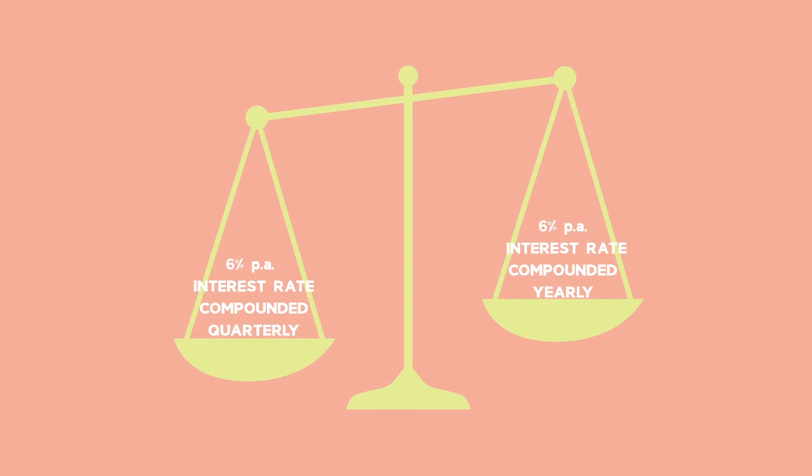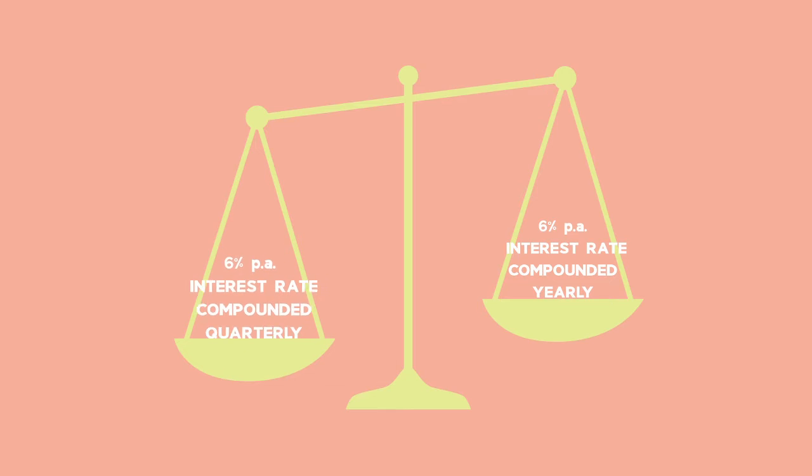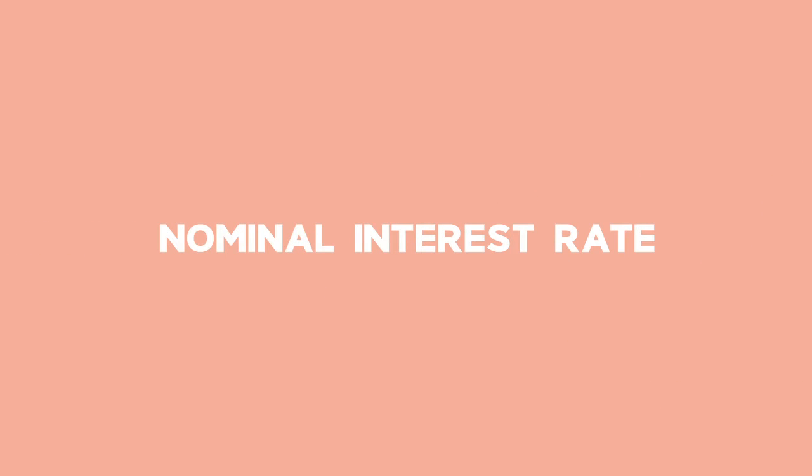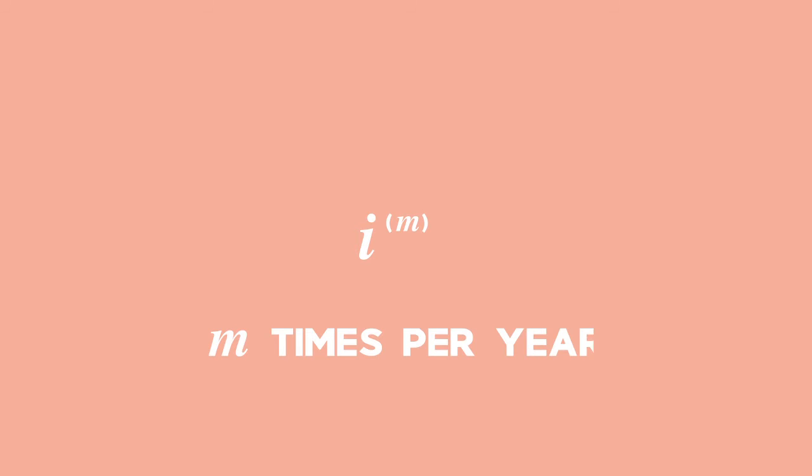An interest rate compounded more than once a year is what we call the nominal interest rate. Given a nominal interest I(M), M here is not a power. The M tells you how many times a year your interest rate is being compounded — it's being compounded at a frequency of M times per year.